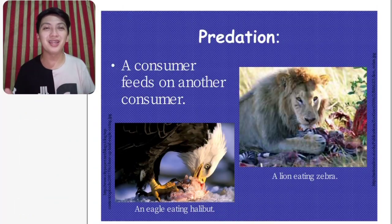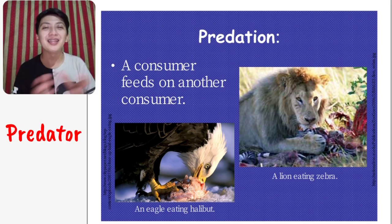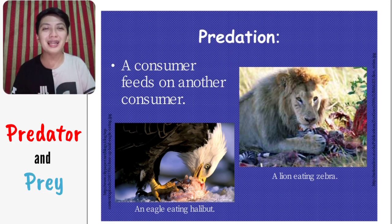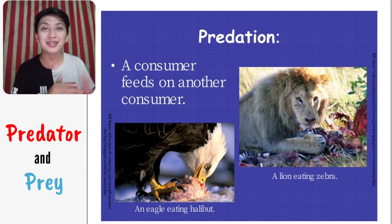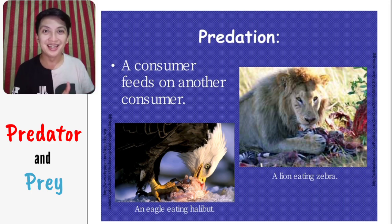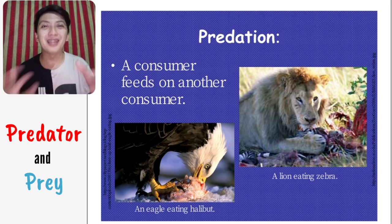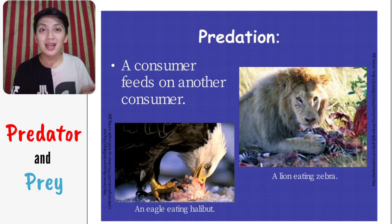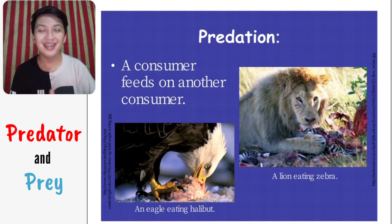Next, we have predation. Predation is when a consumer feeds on another consumer. You can see the predator and the prey — we have an eagle and a halibut, and a lion eating a zebra. The lion and the eagle are the predators, while the halibut and the zebra are the prey. Predators are the ones who eat, and the ones being eaten are the prey.